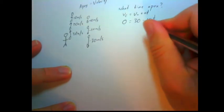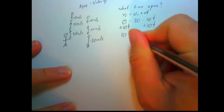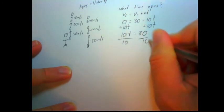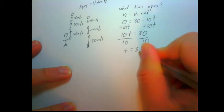Let's add 10t to each side. So we get 10t equals 30. Divide both sides by 10. We get t equals three seconds.